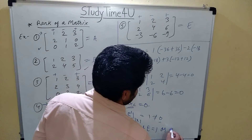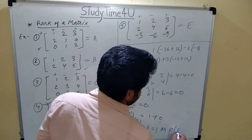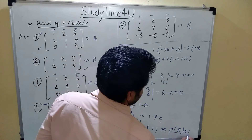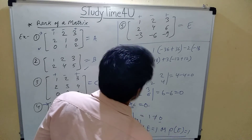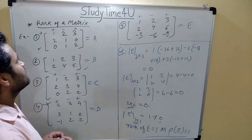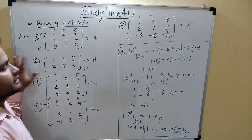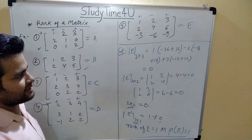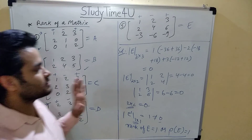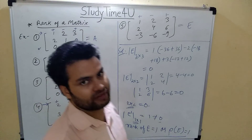In this video we have solved 5 examples related to rank of a matrix, based on the definition of the rank of a matrix using minors and determinants.